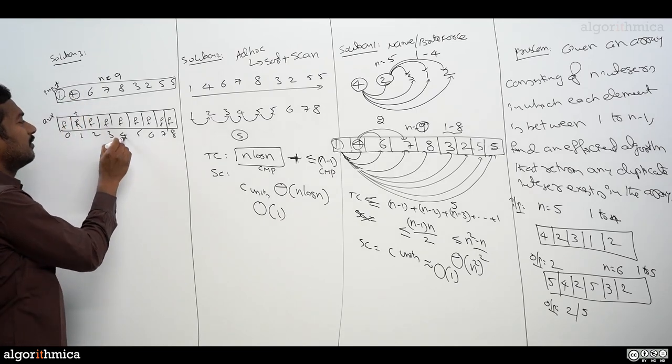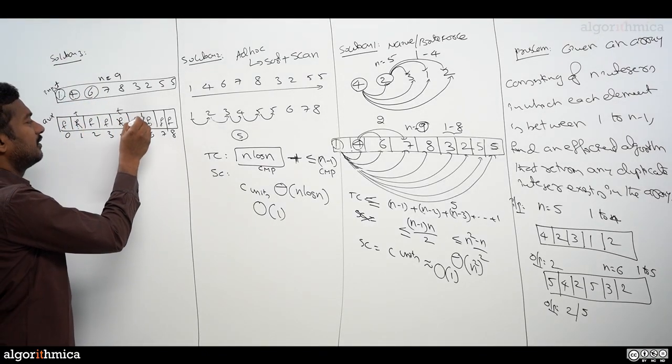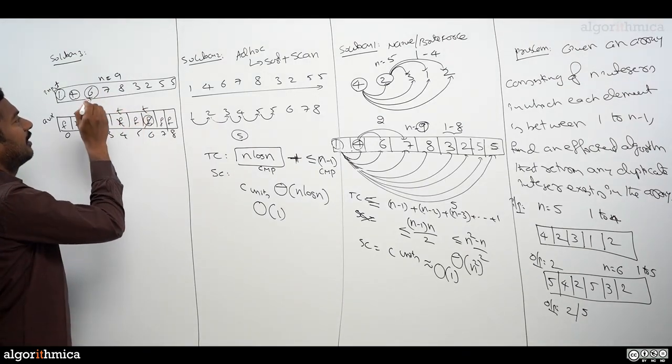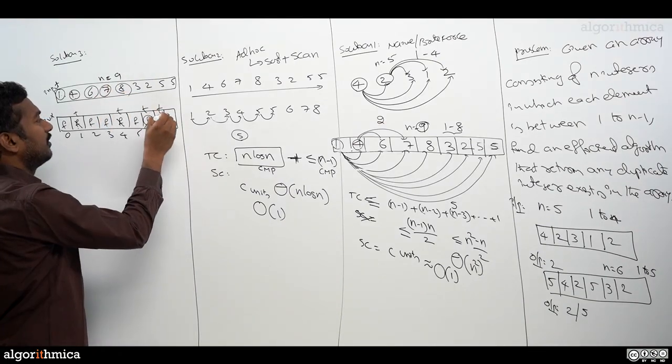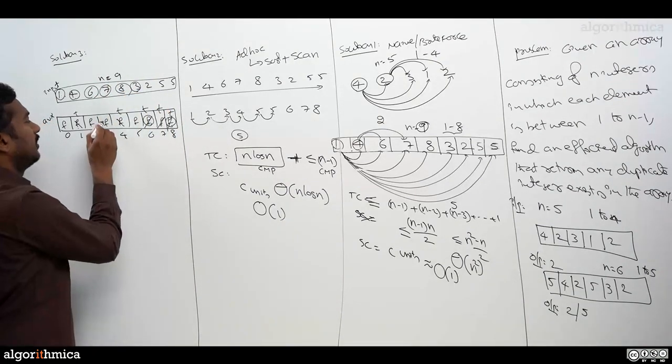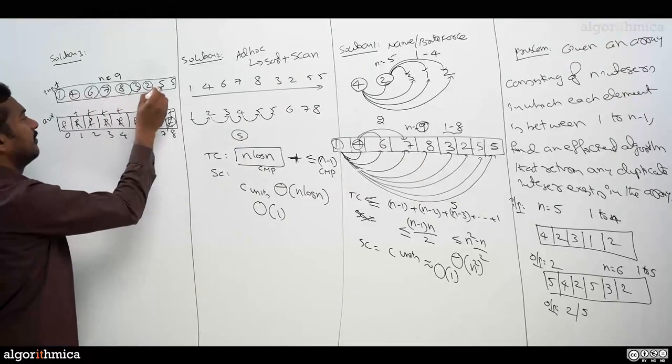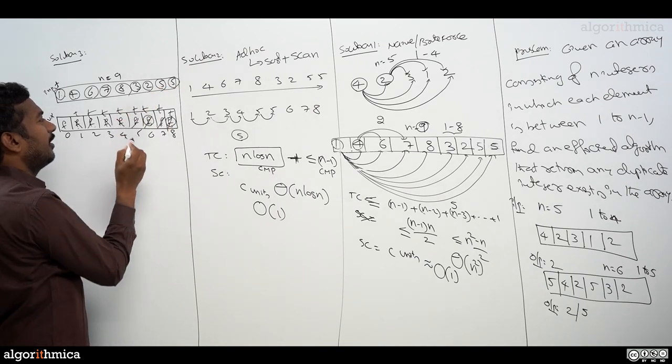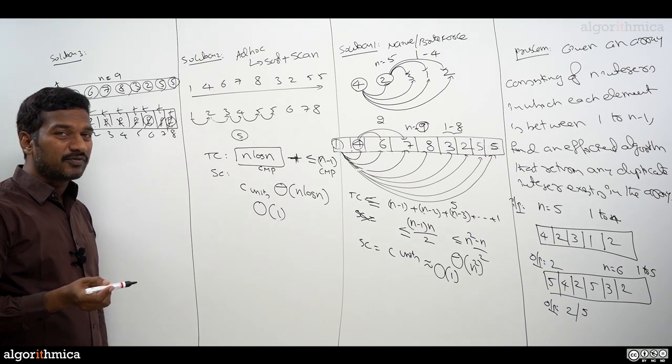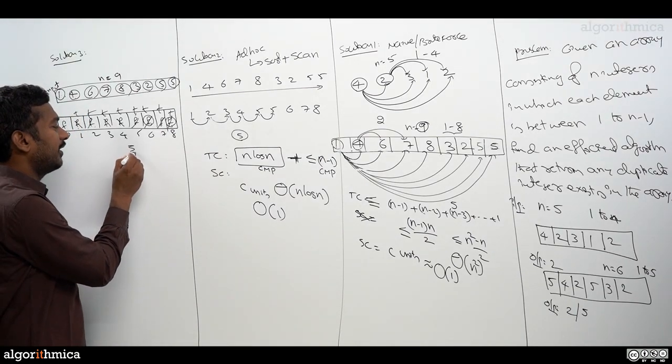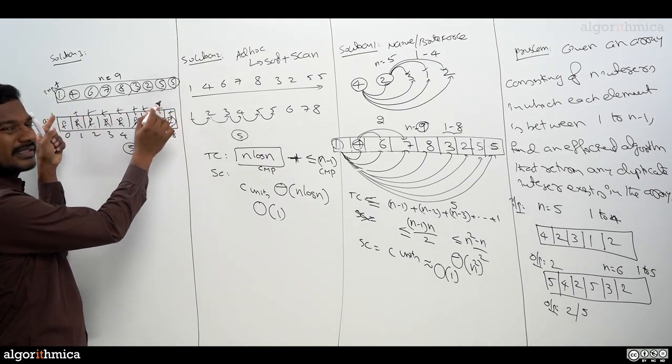Now four, four is first time, update this to true. Six first time, seven first time, eight again first time, three now first time, two first time, five first time. Now five again - look at five, it's already true, means we are visiting this five second time, means it's duplicate. Return this five as a duplication. So by the time you finish one scan, we got the answer.